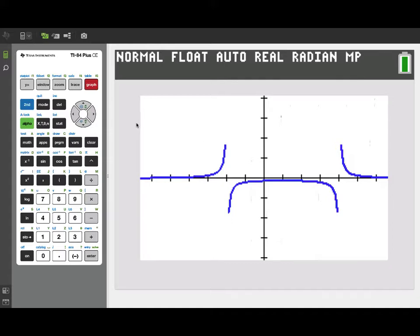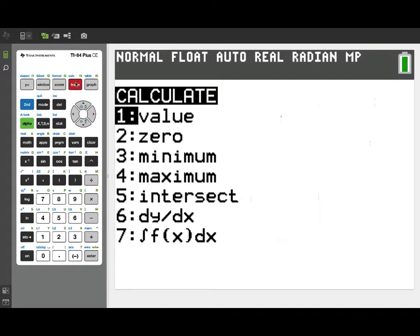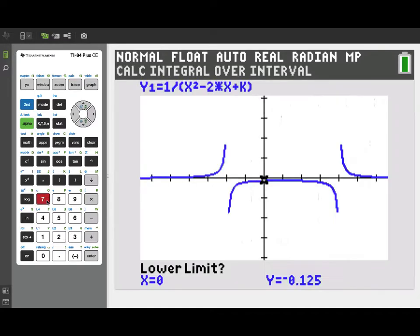I want to point out we could calculate this directly on the graphing screen. If I go to the calculate menu, number 7 is the definite integral. It prompts us for a lower limit. We're already at 0. And the upper limit, let's march over to x equals 1. Hit enter. And there's that value again. And notice it also shades in the region between the curve and the x-axis.